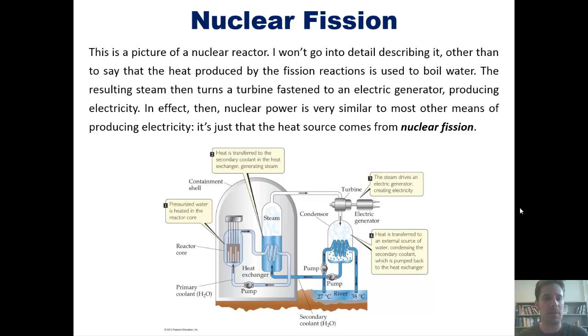In effect, nuclear power is very similar to most other means of producing electricity. It's just that the heat source comes from nuclear fission instead of fossil fuels, coal, or natural gas. That's how electricity is produced—by turning a crank in an electric generator. Most of the time, that's done by heating up water to steam and having it turn a turbine.